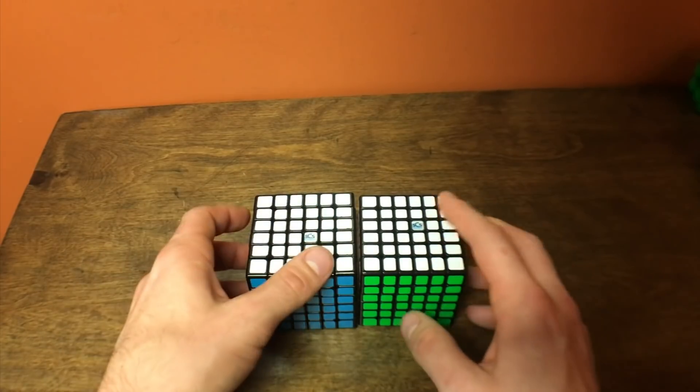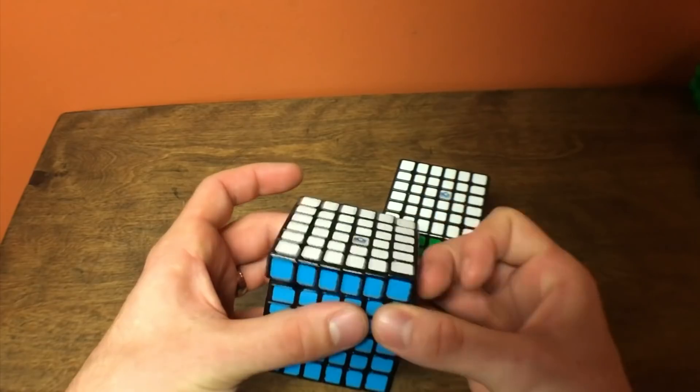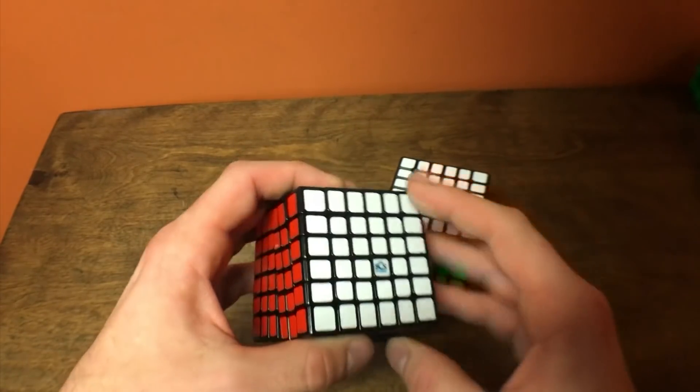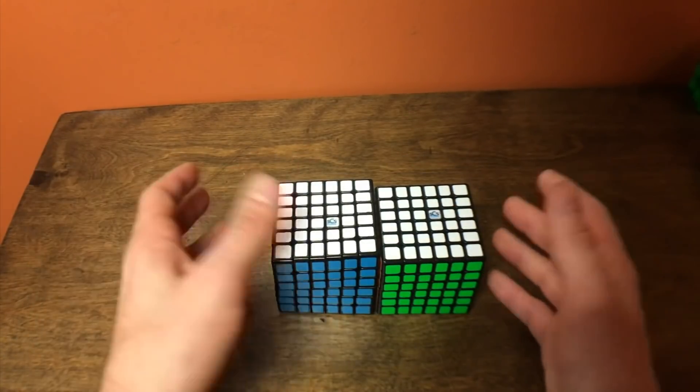Both of us chose the Yushin Red to use, but if you don't mind a slightly larger puzzle and you want a little bit more corner cutting and a little bit faster outer layers, then the Wuhua version 2 would be the way to go. So that's honestly pretty much it with the comparison.